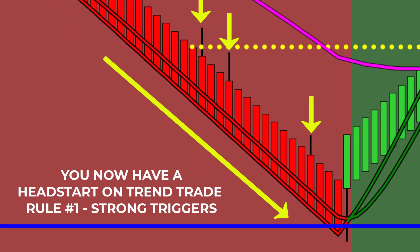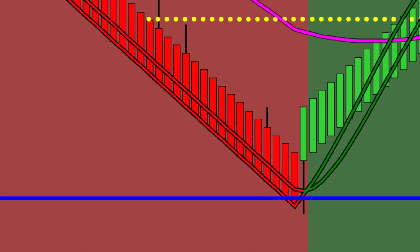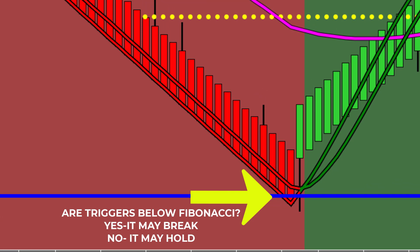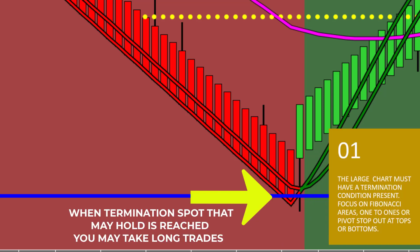When you study the trend trade rules, rule number one says the chart must have strong trigger lines. When you see this look, you will be able to confidently and accurately execute next-gen's trend trade rules until the price reaches a Fibonacci target. At Fibonacci support, analyze the trigger line location. If it is not below the blue Fibonacci line, you must stop taking short trend trades. Trend trade rule number two states the market must not have reached a termination condition, and Fibonacci support with trigger lines not below the blue line is a termination condition.